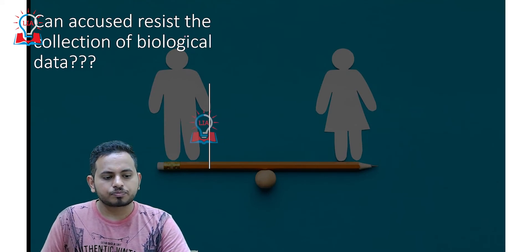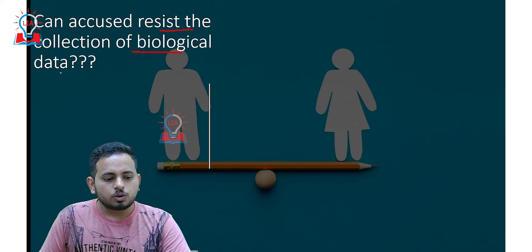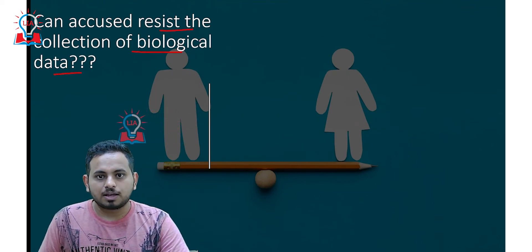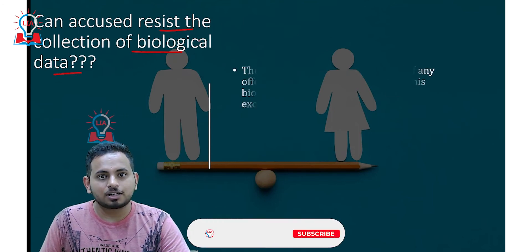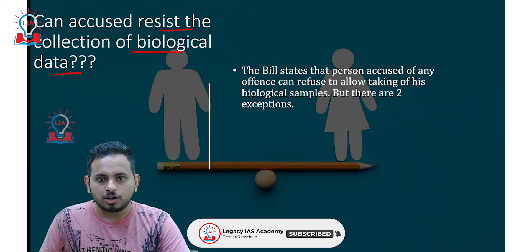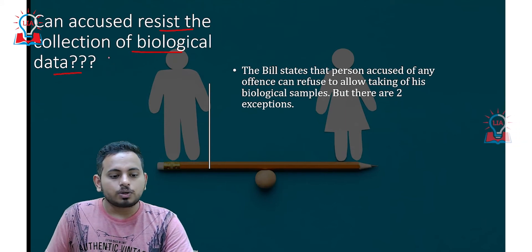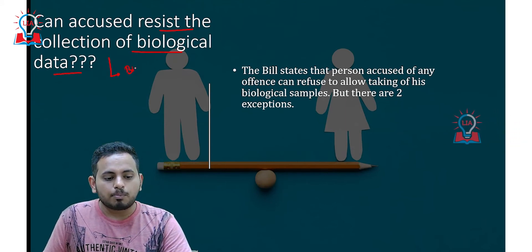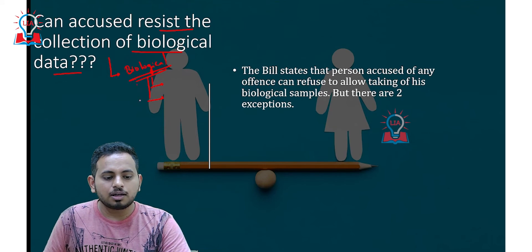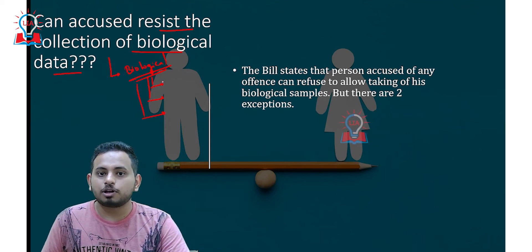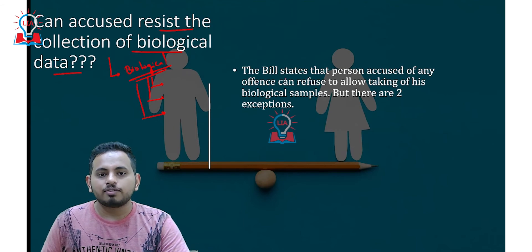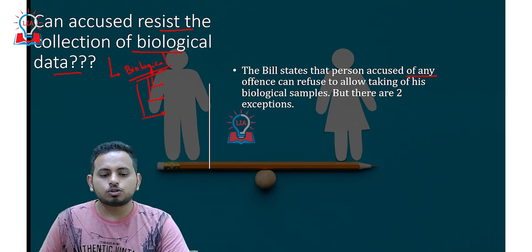Can any person resist this particular collection of data? Suppose if you're arrested tomorrow, can you say that this is a violation of your fundamental right and refuse to give identification? No — you can only resist with respect to biological samples. We have discussed the biological samples: semen, hair, blood. Only with respect to these biological samples are two exceptions provided under the bill.